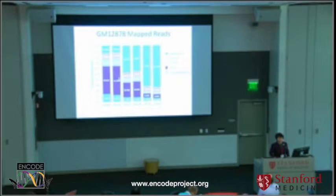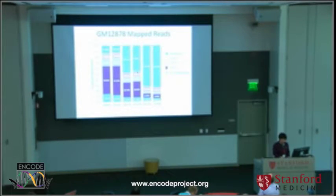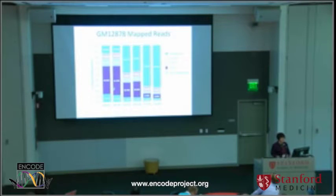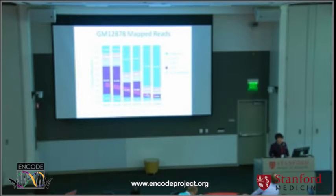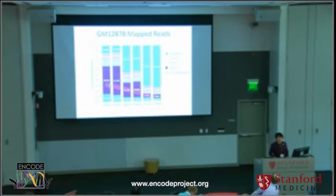After mapping reads to the genome and transcriptome, we found that the nuclear poly-A minus RNA is enriched with intronic content — a lot of reads map to introns, and then intronic reads decrease. We were very happy to see this because it means we can make use of nuclear poly-A minus RNA-seq data to examine the intronic content of these RNA.